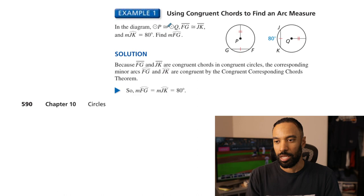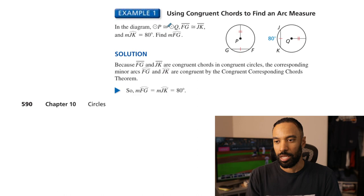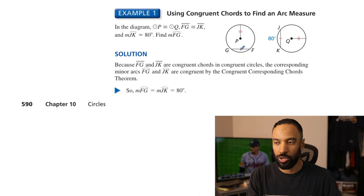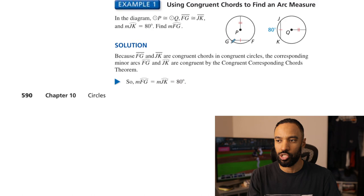Let's look at some examples. In the diagram, circle P is congruent to circle Q, and we have chords GF and JK that are marked as congruent. The measure of arc JK is 80 degrees. Find the measure of arc FG. Well, if arc JK is 80 degrees, arc FG will also be 80 degrees because you have congruent circles and congruent chords. By the Congruent Corresponding Chords Theorem, these two arcs have the same measure — 80 degrees.